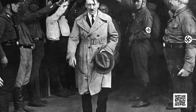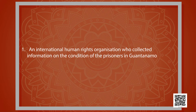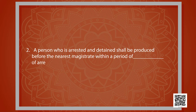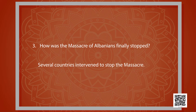Let's have a quick review of what we have just covered. An international human rights organization that collected information on the condition of prisoners in Guantanamo Bay was Amnesty International. A person who is arrested and detained shall be produced before the nearest magistrate within a period of 24 hours of the arrest. Several countries intervened to finally stop the massacre of Albanians.